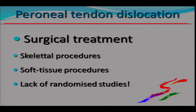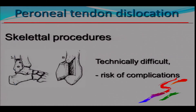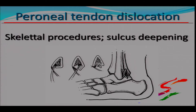When we come to surgical treatment for chronic or recurrent dislocations, we talk about skeletal procedures and soft tissue procedures. The skeletal procedures are much more technically difficult and have some risk of complications that have been well reported in the literature. They are mainly based on making the posterior bone bulk a little bit bigger to ensure the tendons won't dislocate, or deepening the sulcus so the tendons stay behind where the retinaculum is re-fixed to the posterior part.